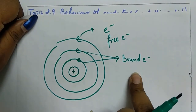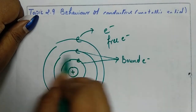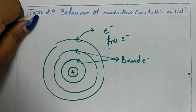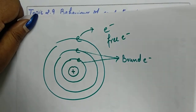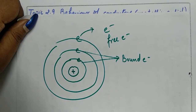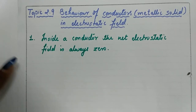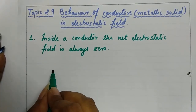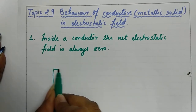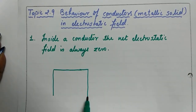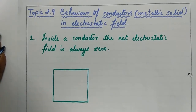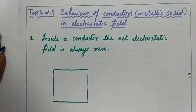These bound electrons will remain in their shells, attached to the nucleus. If an electron has come out, it is a free electron. This free electron can move everywhere randomly in the metallic solid. So whenever the metal is formed, free electrons are also formed — they play the role in conduction. Now suppose we are having a metallic conductor, and we are placing this metallic conductor into an external electric field.